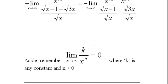The limit of k over x to the n as x heads to infinity equals zero, where k is any constant and n is greater than zero. What this causes is the top stays constant and the bottom grows without bounds, so the expression heads to zero. We're going to use this in a minute after we finish simplifying the expression.